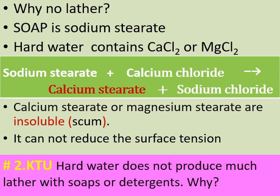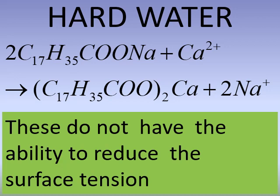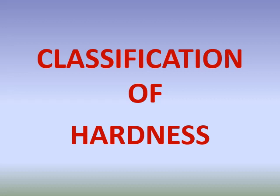Calcium stearate does not have the capability to reduce surface tension, and that is why hard water does not lather with soap. The chemical equation is: C₁₇H₃₅COONa (sodium stearate) reacts with calcium to form (C₁₇H₃₅COO)₂Ca (calcium stearate). Calcium stearate appears twice because calcium is a bivalent ion whereas sodium is monovalent. Calcium stearate lacks the ability to reduce surface tension and hence does not lather.